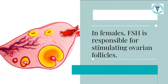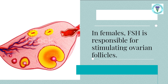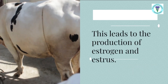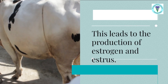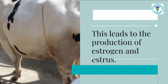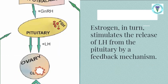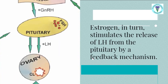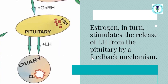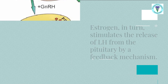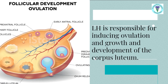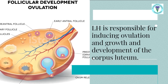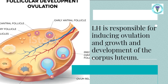In females, FSH is responsible for stimulating ovarian follicles, leading to the production of estrogen and estrus in the animal. Estrogen in turn stimulates the release of luteinizing hormone (LH) from the pituitary by a feedback mechanism. LH is responsible for inducing ovulation and the growth and development of the corpus luteum.